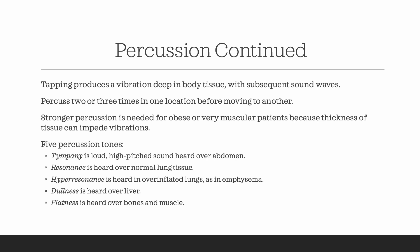Percussion vocabulary: timpani is a loud, high-pitched sound heard over the abdomen — light and airy. Resonance is heard over lung tissue. Hyperresonance is heard over overinflated lungs, like in emphysema. Dullness is heard over the liver — very low and tight. Flatness is heard over bones and muscle — like hearing a hard surface. To really understand what these sounds like, I'd recommend YouTubing each one so you can hear them clearly.